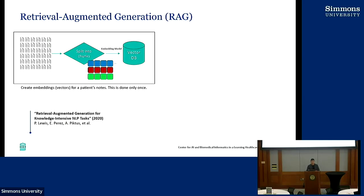Going back to our visualization — what are we really doing? We're taking the patient's notes and splitting them into various chunks. Chunks could be either a length of text or split by sentences. There are many parameters to setting this up, but in general you split the documents into chunks and then apply an embedding model to create a vector for every single chunk. As Sean Murphy discussed yesterday, you put all those slices of text — all those chunks — into a database, and alongside that text you store the vector representation.